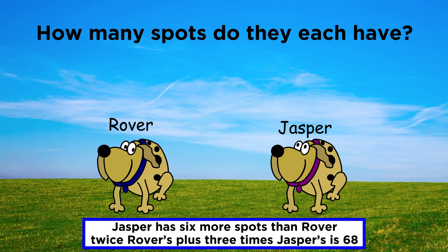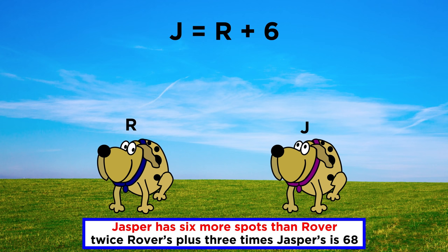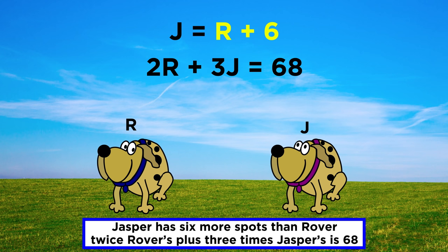Well first let's assign the variables. Rover's spots are represented by R, and Jasper's by J. How do these variables relate to one another? Well if Jasper has six more spots than Rover, then J equals R plus six. Then we have this other bit of information, whereby two R plus three J equals sixty-eight. What can we do from here? Well if J equals R plus six, we can put R plus six in this other equation instead of J, because they are equivalent.